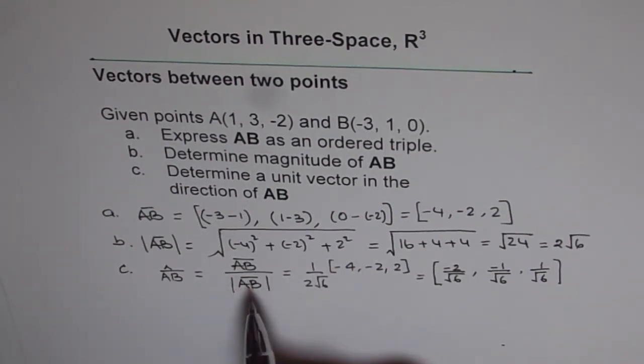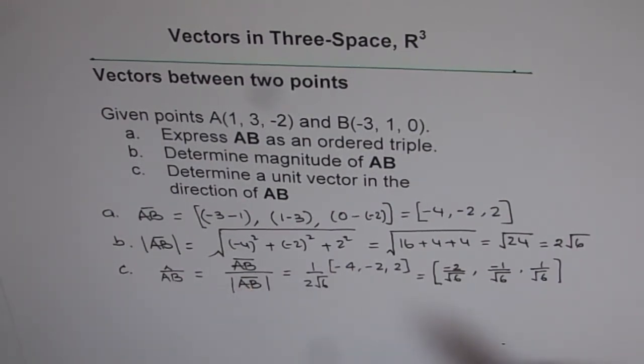And unit vector is vector divided by its magnitude. Since vector has direction and magnitude, when you divide the vector by its magnitude, you get unit magnitude and it becomes a vector of one unit in the same direction as the original vector. So that is how we can solve these kinds of problems. Thank you.